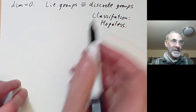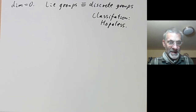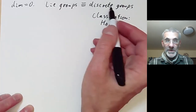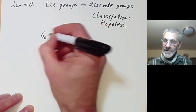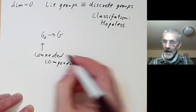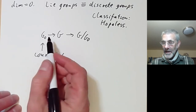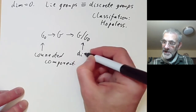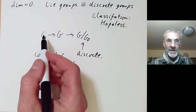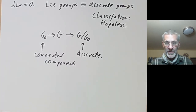Even for finite discrete groups we can't really classify them in any meaningful way. We can classify the simple ones, but how the simple ones are joined together seems to be very complicated. However, we can sort of reduce any Lie Group to a discrete group and a connected group. If we take a Lie Group G, it has a connected component containing the identity, which is also a Lie Group and a normal subgroup. We can form the quotient group G mod G₀, and this quotient is discrete or zero-dimensional.